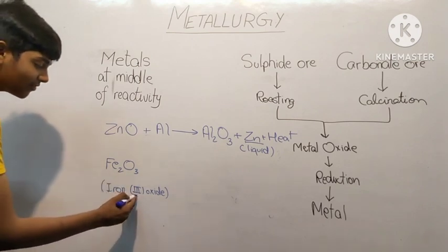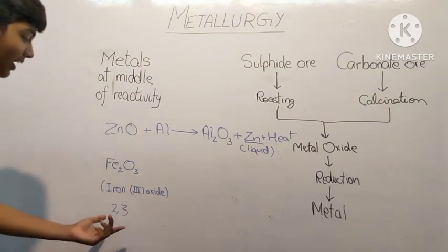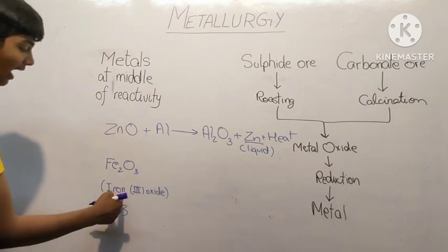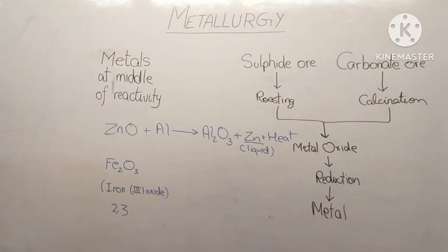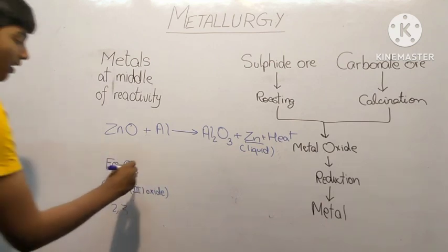We write 3 as valency. Iron's valency can either be 2 or 3. So if we write iron 3, that means we are talking about its valency when it is 3. If we write iron 2, it would be 2. So iron 3 oxide, which is Fe2O3, when we use aluminum.